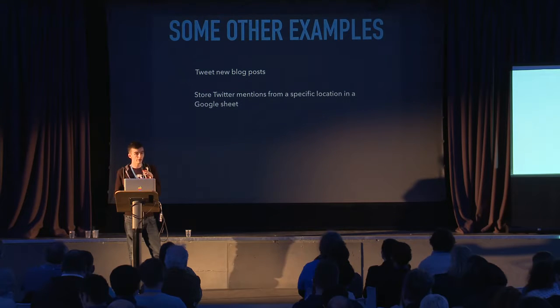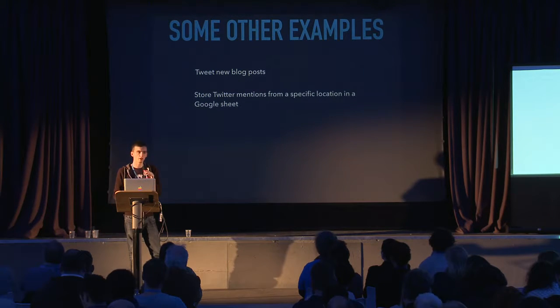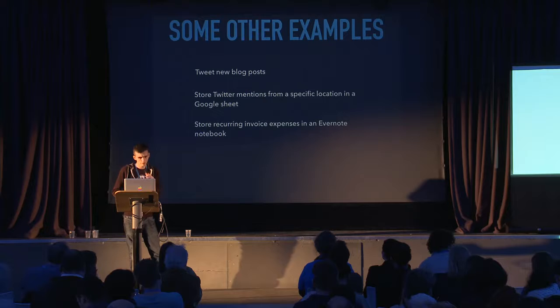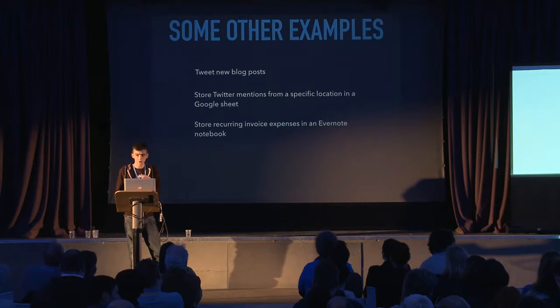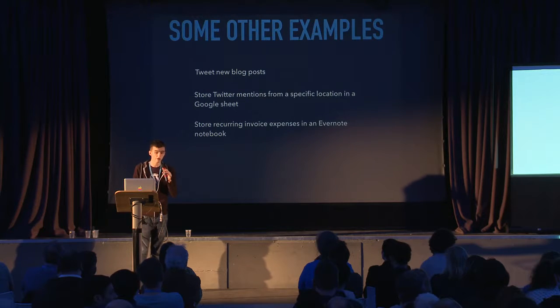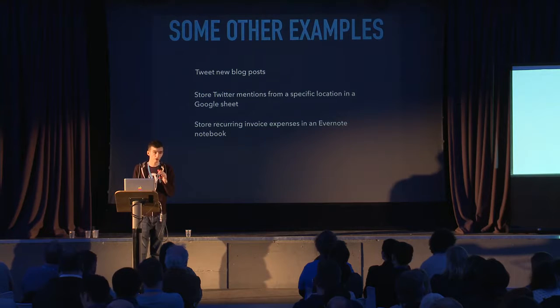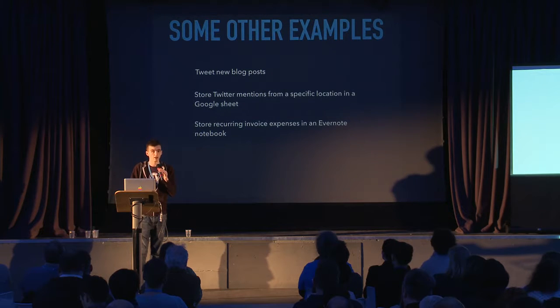You can store Twitter mentions from a specific location in a Google Sheet. This might be a really good marketing activity — if you're trying to target a specific location with your services or products, you can build up a Google Sheet of contacts of people that have mentioned you on Twitter from that location, who might be people you could consider contacting. You can also store recurring invoice expenses in an Evernote notebook. If you have recurring invoices, you can create a Zap to automatically send any invoice that arrives in your email to Evernote.